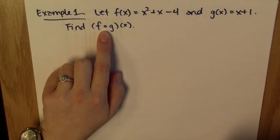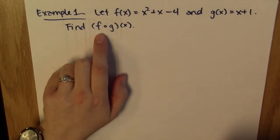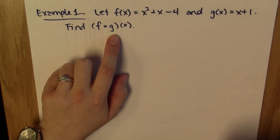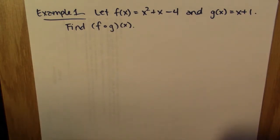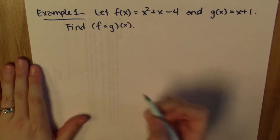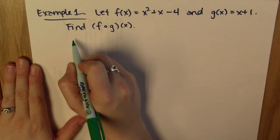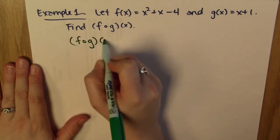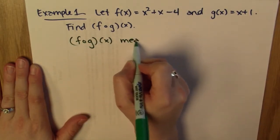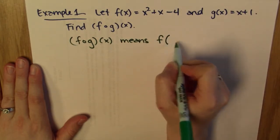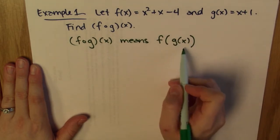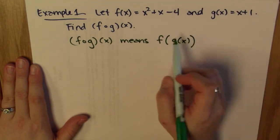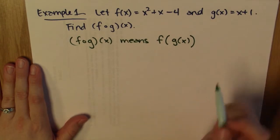This notation — f, then the little circle, then g — means f composed with g. I can either read it as 'f composed with g' or 'f of g of x.' I like to write small parentheses around the g of x and large parentheses around the f of x to remember which one is which.